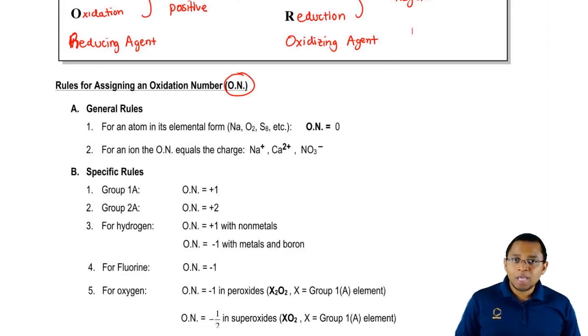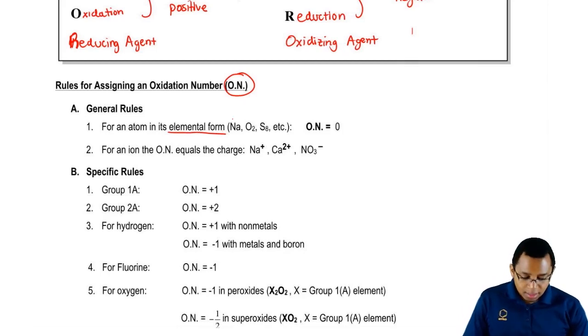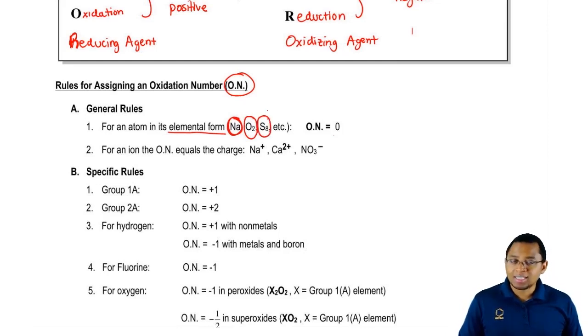We have our two general rules and then our more specific rules. The first general rule is for an atom in its elemental form. Elemental form means two things: the metal is by itself, such as sodium, or the element is connected to itself. Oxygen here is connected to another oxygen. Sulfur here is connected to a bunch of sulfurs just like itself. If you're by yourself or connected to copies of yourself and you have no charge, that is your elemental form.